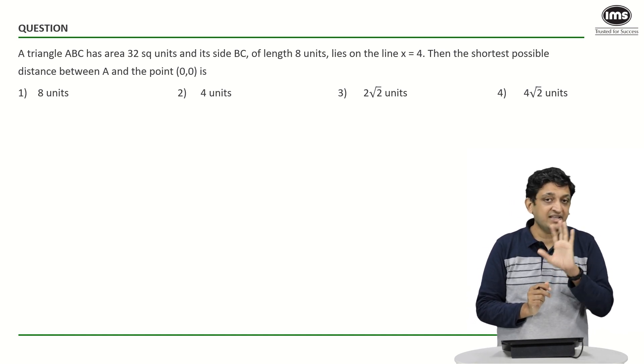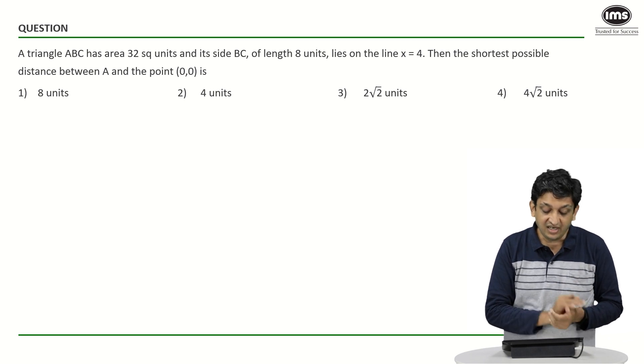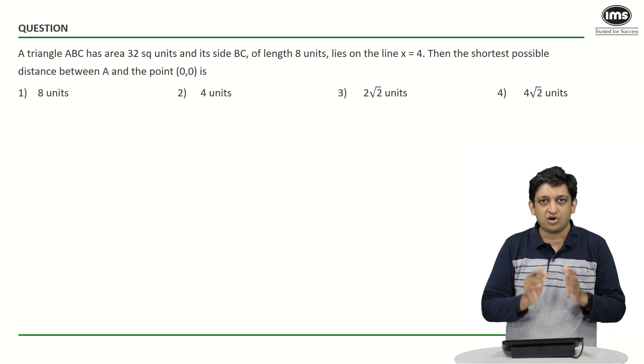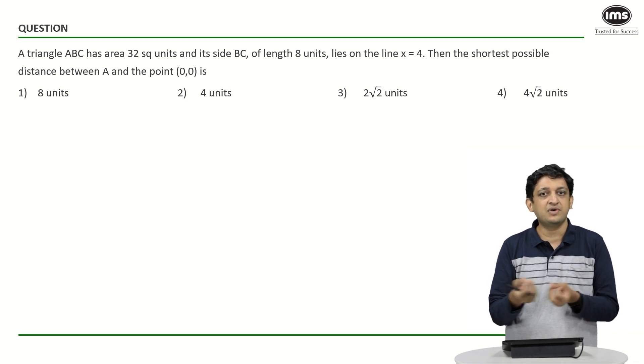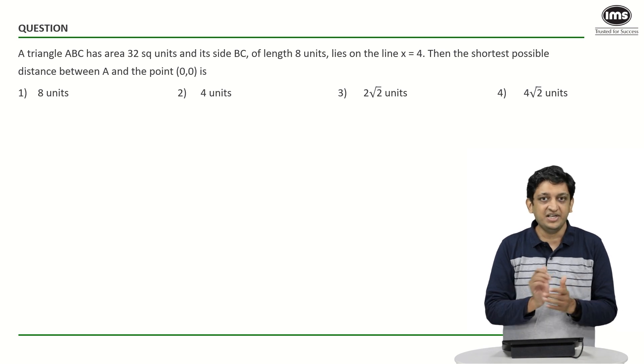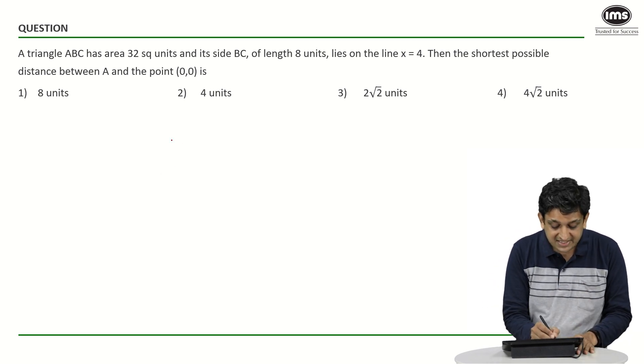We have to figure out the shortest possible distance between A, which is the third vertex of the triangle, and the point (0,0) or the origin. This is going to be a matter of visualization more than actually solving the question, so I'll try to represent it in a way that is friendly to you.